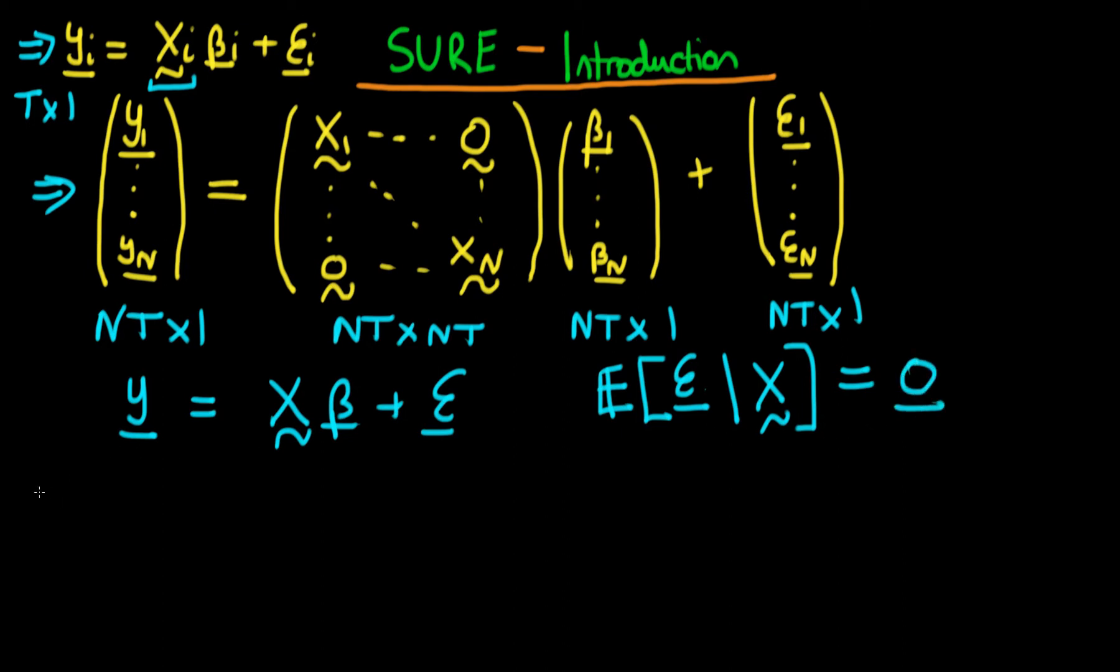then we can write that the variance of our error term, so the variance of error given that we have our matrix of independent variables X, is actually the same thing as the expectation of the error vector times the transpose of the error vector given that we have X.